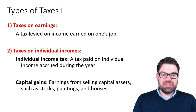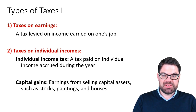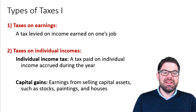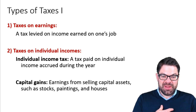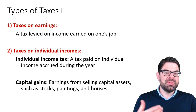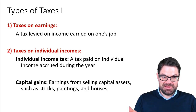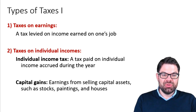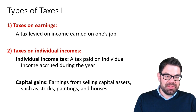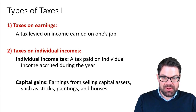We distinguish between five types of taxes. The first is taxes on earnings, which typically apply to salaried employees. If you work in a job, you don't receive your gross pay and then pay taxes yourself — the taxes are taken off by your employer and paid directly to the tax man.